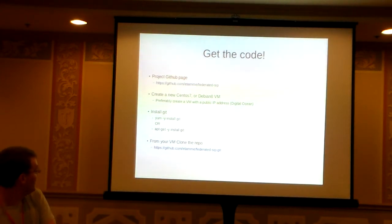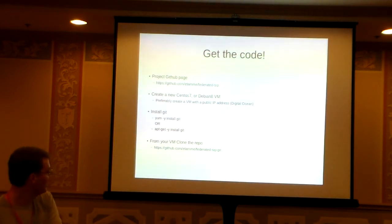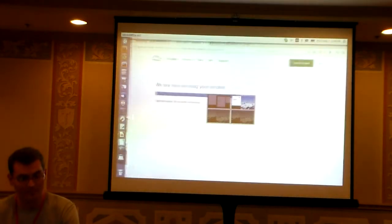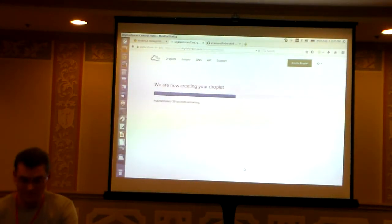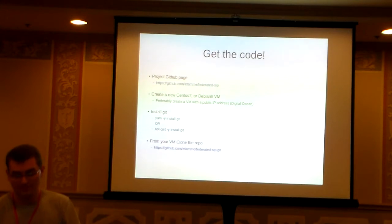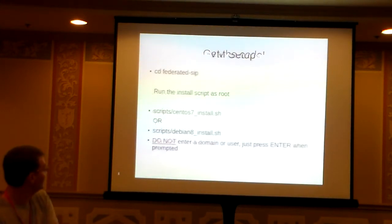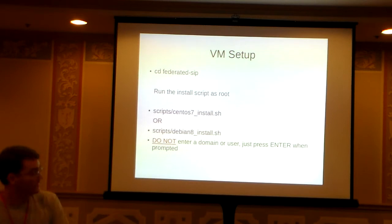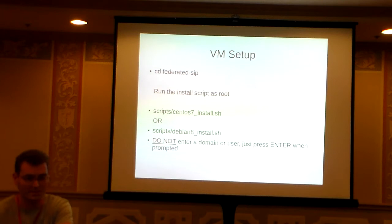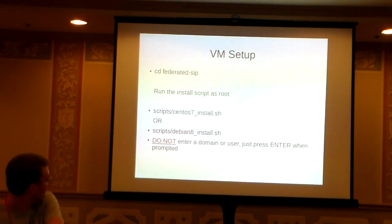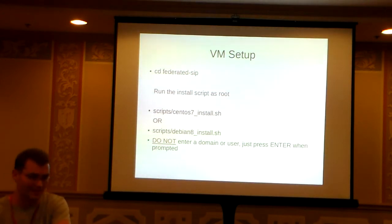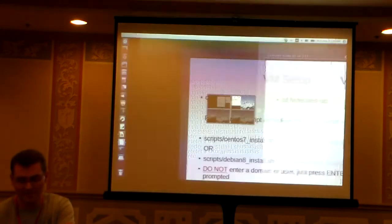Once your VM is up, just install git on it quickly and then clone the repo and get started. There are basically two scripts in the scripts directory: either centos-install or debian8-install. It will prompt you whether or not you want to enter a domain and user — just hit enter unless you have a domain pre-set.